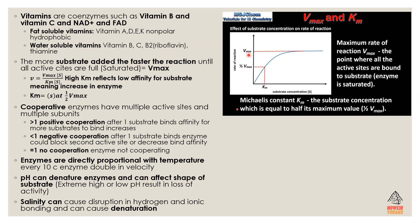Now for Vmax and KM — the concentration. The more substrate added, the faster the reaction, until all active sites are full — that is the Vmax. To increase reaction rate, you add more substrate. With more substrates competing to bind, the chances of binding increase faster. V equals Vmax divided by KM, and a high KM concentration reflects low affinity for substrate, meaning an increase in enzyme activity is needed.